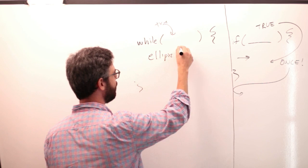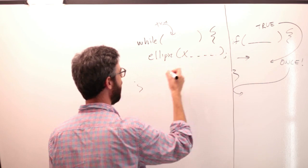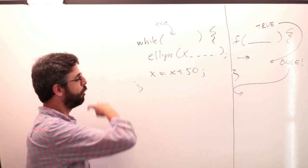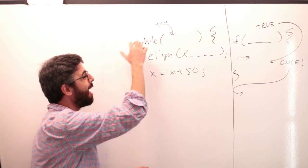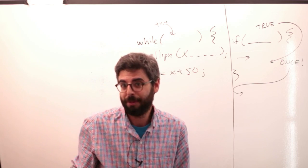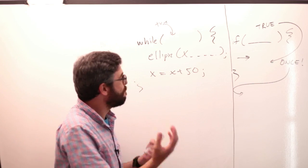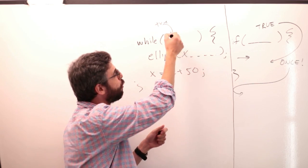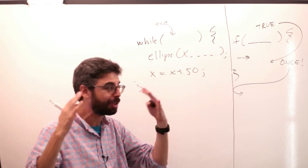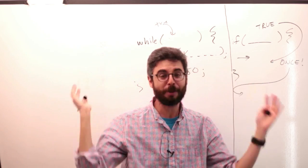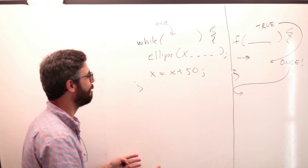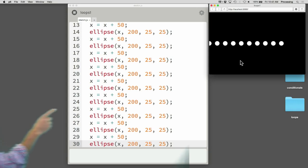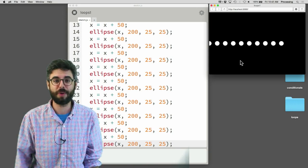I just want to say ellipse at x, et cetera, and then x equals x plus 50. This is exactly what I want to do — do this over and over again while something is true. We need to figure out when to stop. If I just wrote 'true' inside the while condition, this loop would execute forever and the program would never stop — it would get stuck there and we'd never see anything on the screen. So what is my exit condition?